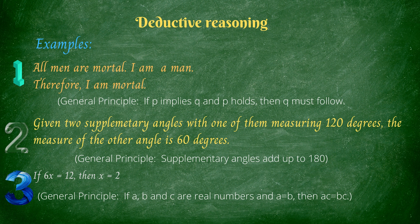The second example is given two supplementary angles with one of them measuring 120 degrees, the measure of the other angle is 60 degrees. So the general principle here is supplementary angles add up to 180 degrees.